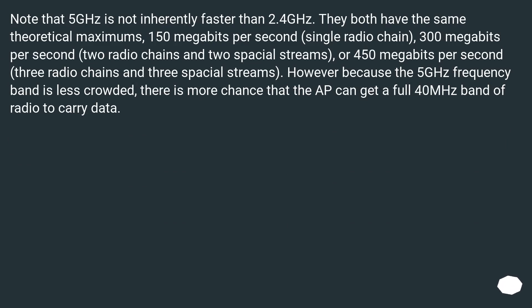Note that 5GHz is not inherently faster than 2.4GHz. They both have the same theoretical maximums: 150Mbps for a single radio chain, 300Mbps for two radio chains and two spatial streams, or 450Mbps for three radio chains and three spatial streams. However, because the 5GHz frequency band is less crowded, there is more chance that the access point can get a full 40MHz band of radio spectrum to carry data.